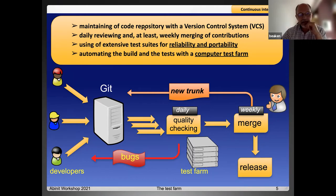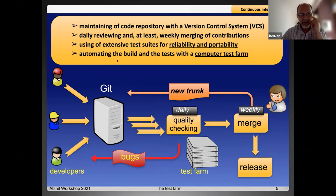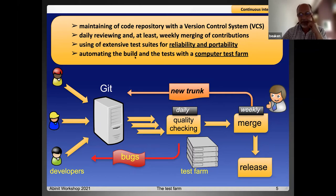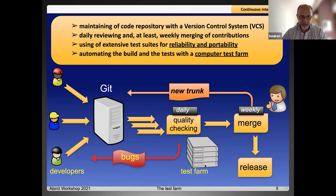Maintaining a code repository with a version control system like Git. Daily resolving and at least weekly merging of contributions. Using an extensive test suite for reliability and portability. And finally, automating the build and the test with the computer. You see here the workflow of this CI.